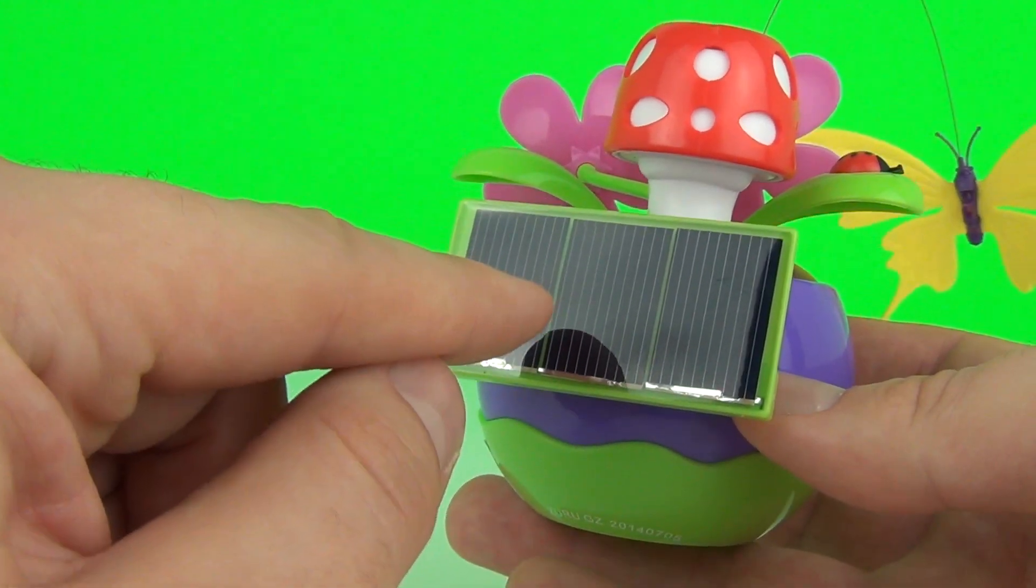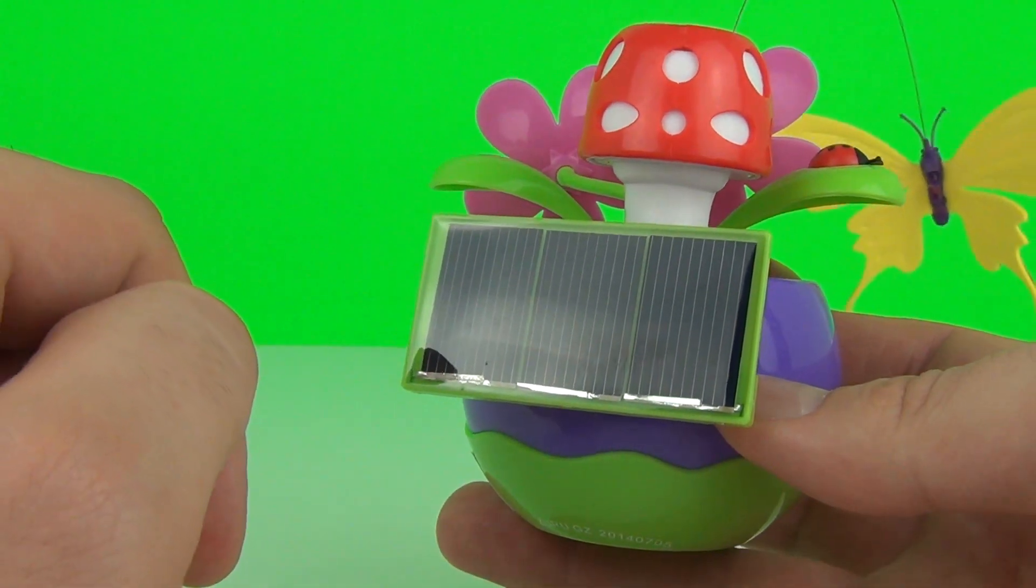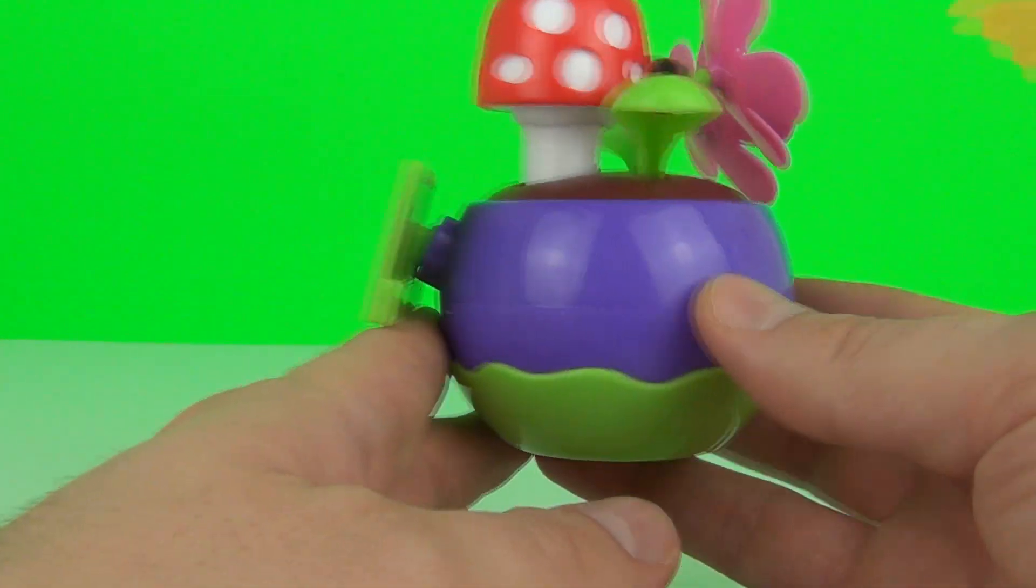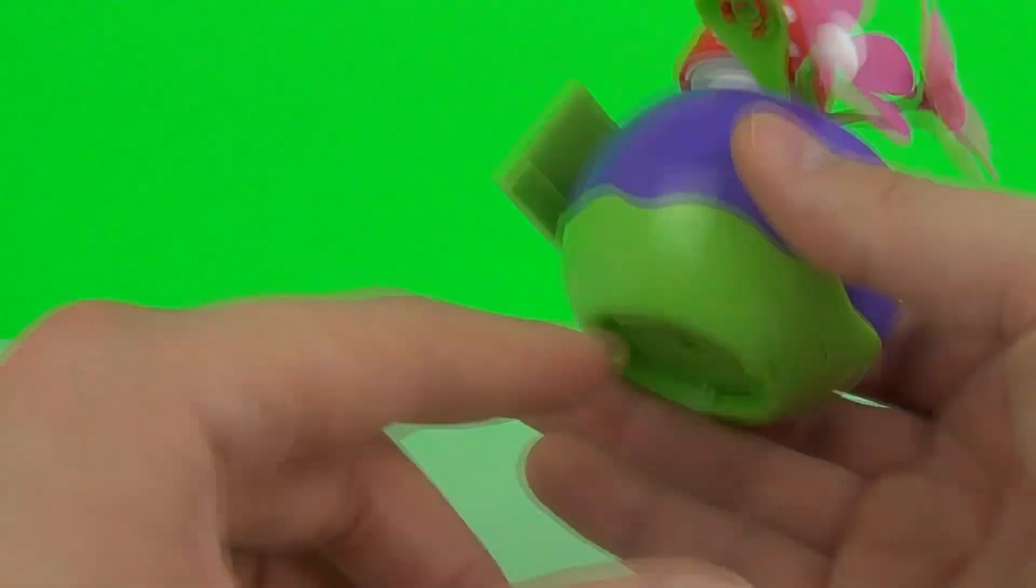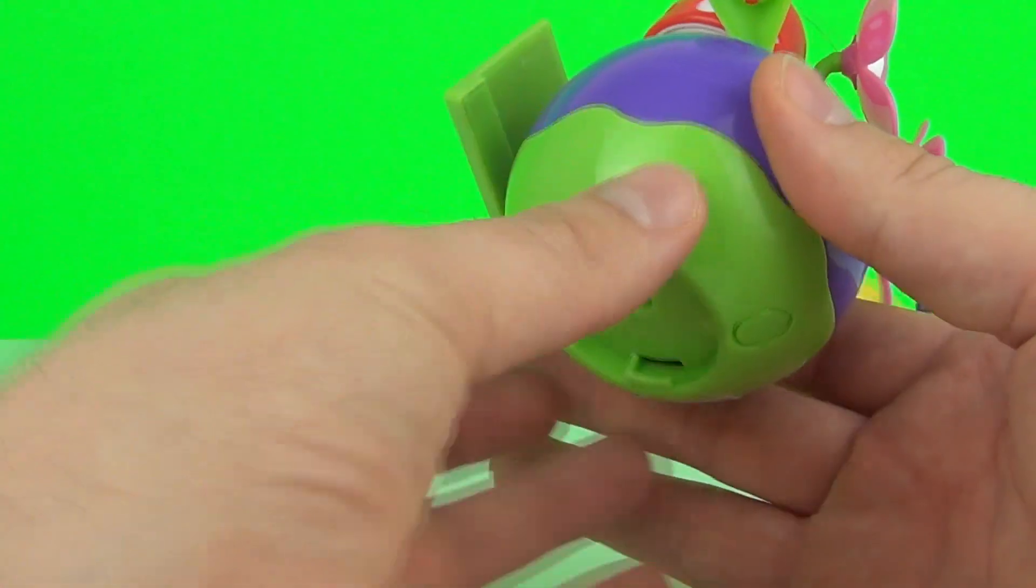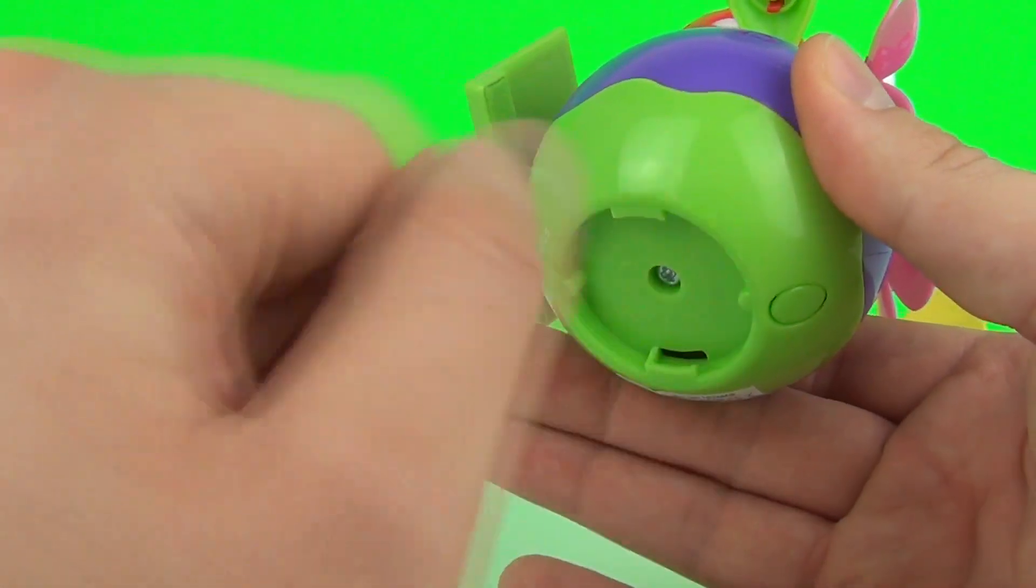It does come with batteries. To access those batteries you can unscrew that and your batteries will be inside. So whatever the weather, you can still use your butterfly. It does not matter guys.